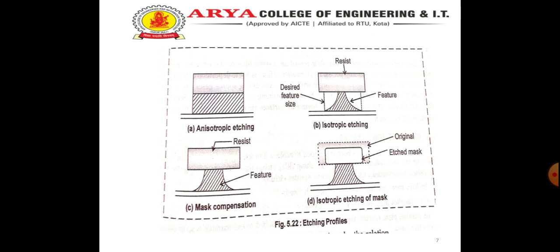If etching progresses equally in all directions, it is referred to as isotropic. Most wet etching processes are isotropic, which results in over etching or undercut of the mask, thereby narrowing the feature. Different etching profiles are shown in the slide. Isotropic etching can be countered by making the mask larger, but when feature height is comparable to the feature size, line width and space, mask compensation is not possible.